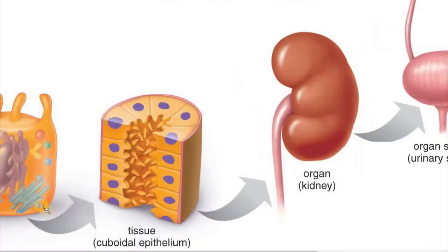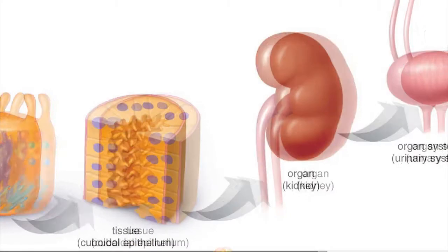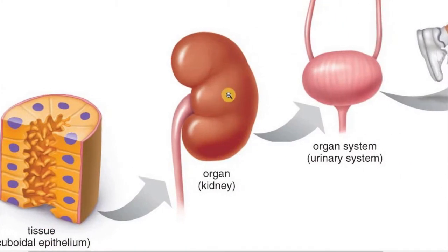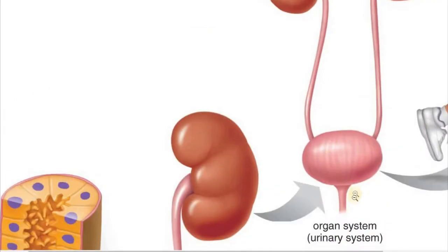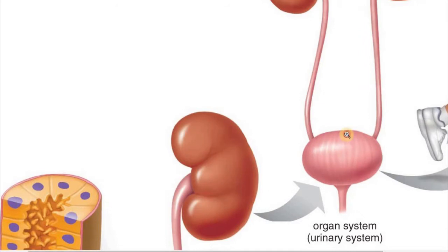We begin with a cell. A group of these cells makes this tissue. Some tissues make an organ — in this case a kidney. A group of organs — two kidneys, ureters, bladder, urethra — make the urinary system. And different systems make the organism: a human being.